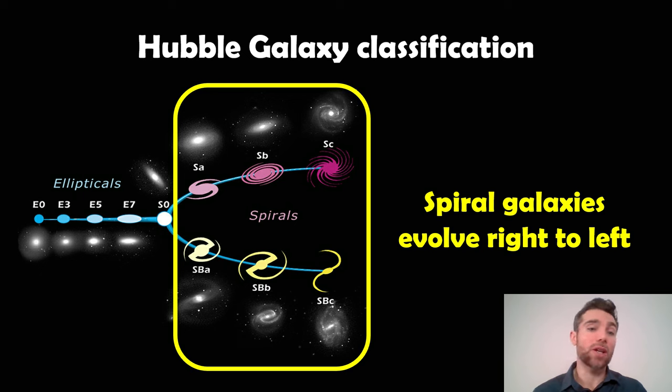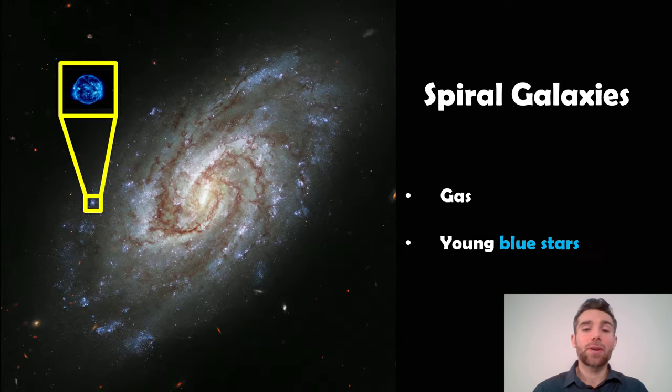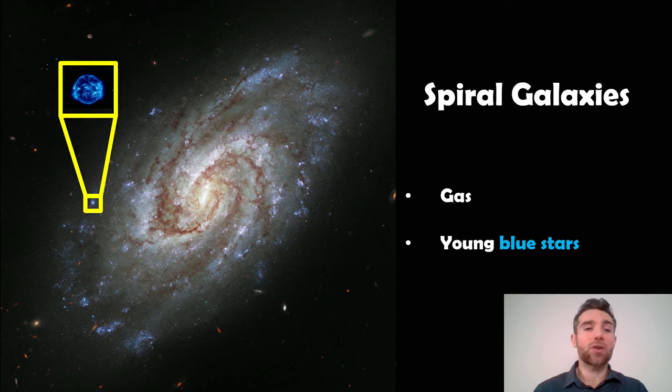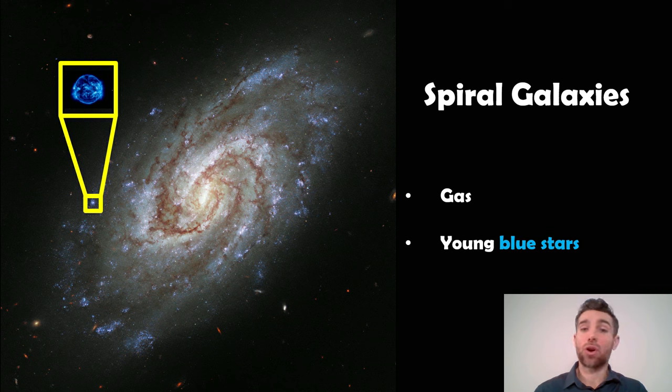They actually evolve from right to left and that's true for the top spirals which are normal spirals but also for the barred spirals which is the bottom pathway there. They do the same thing. The difference is one has a bar and one does not. Now spiral galaxies in general have gas. The younger they are the more gas they have and because of that they undergo star formation. So galaxies like this will have stars forming in them still or they will still also have lots of young blue stars.